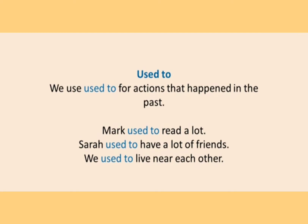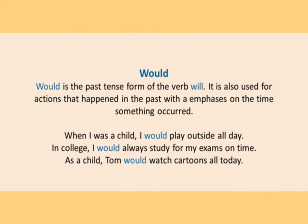Let's see a few examples. 'Mark used to read a lot.' This sentence is talking about a boy named Mark who used to read a lot in the past but now he doesn't. Similarly, 'Sarah used to have a lot of friends' — in the past she used to have a lot of friends but now in the present she doesn't. Next: 'We used to live near each other.' This means that in the past we were neighbors and we used to live near each other, but now we don't.